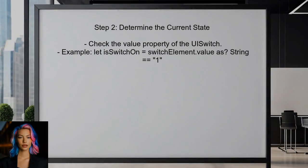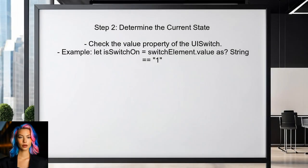Next, the user can determine the current state of the UISwitch. In XCUITest, this is done by checking the value property of the UISwitch element. The value will indicate whether the switch is on or off.